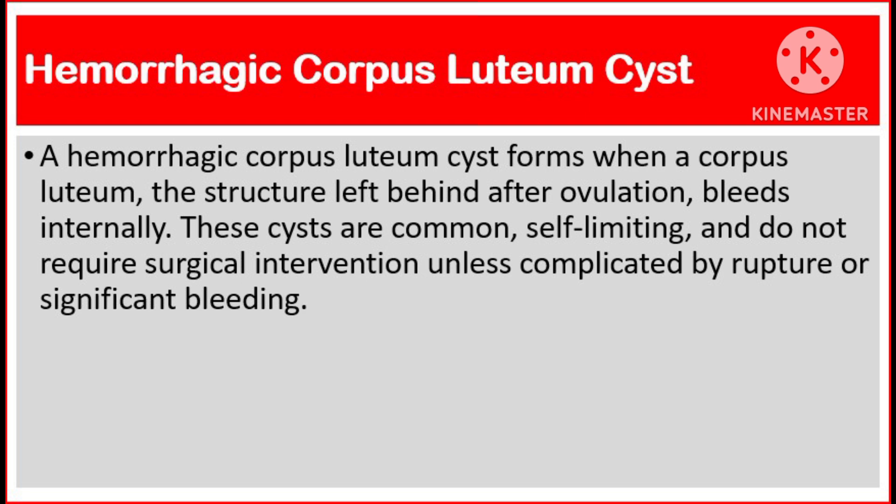Hemorrhagic corpus luteum cysts form when a corpus luteum — the structure left behind after ovulation — bleeds internally. These cysts are common, self-limiting, and don't require surgical intervention unless complicated by rupture or significant bleeding.